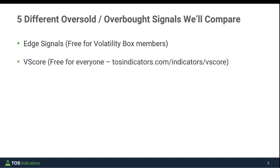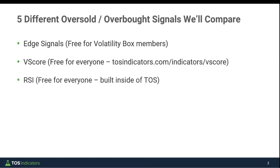The second indicator we're going to compare is the V-Score, which is free for everyone — you can download it at tosindicators.com/indicator/v-score. The overall premise is using the extended zones on the V-Score: things three standard deviations in the positive or negative side, or somewhere in that two-to-three standard deviation zone, to identify overbought/oversold territory and see if a reversal is coming.